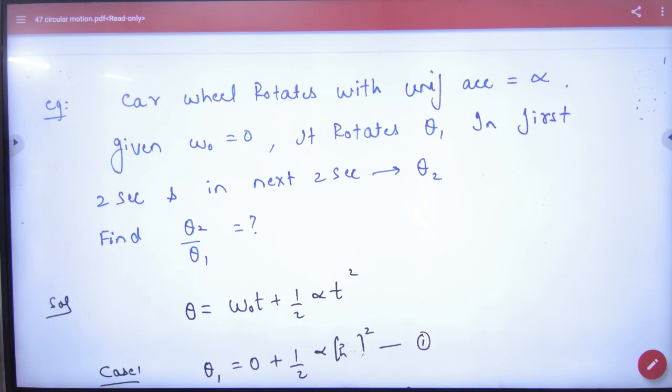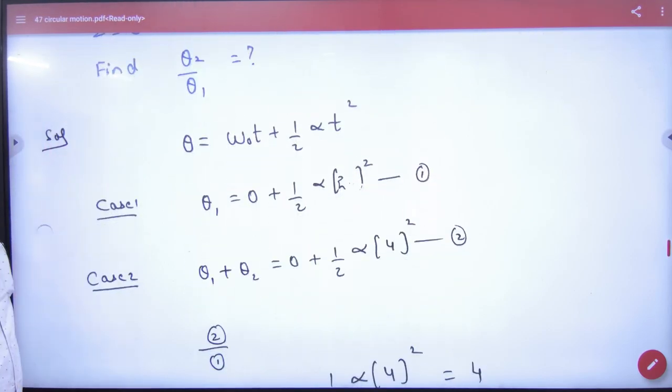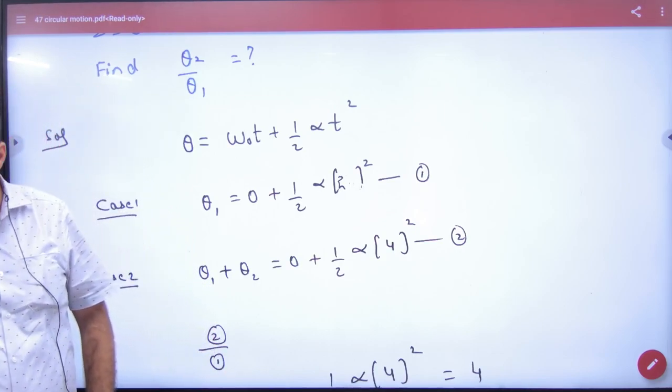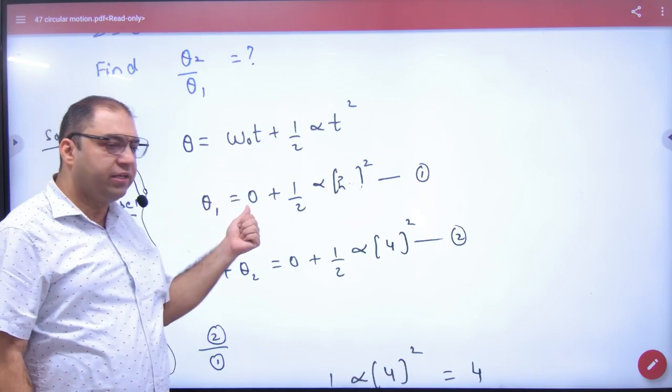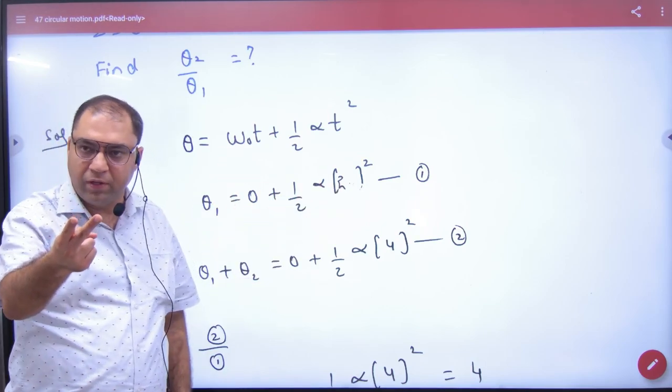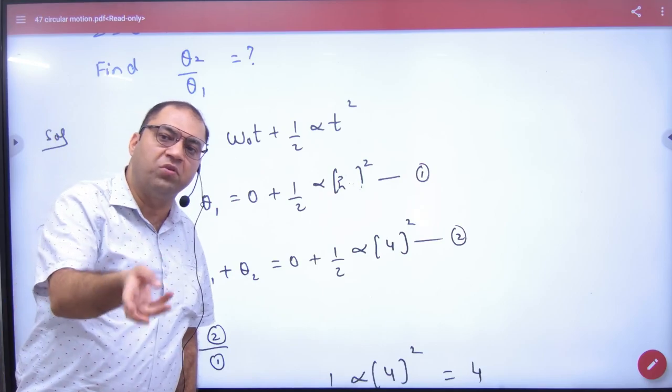Now, what will we do in this? Let's take the equation. Theta is equal to omega not t plus half alpha t square. Case number one, theta1. What is the initial omega? Zero half into alpha into two square. Now, what is the next angle in the next two seconds? Theta2.